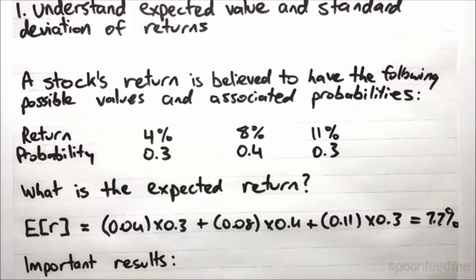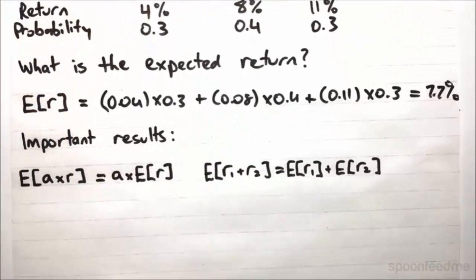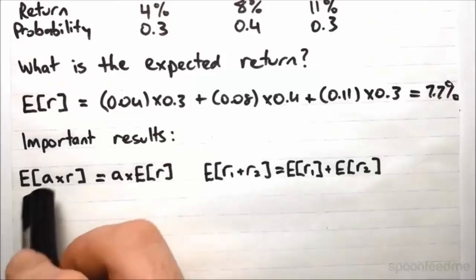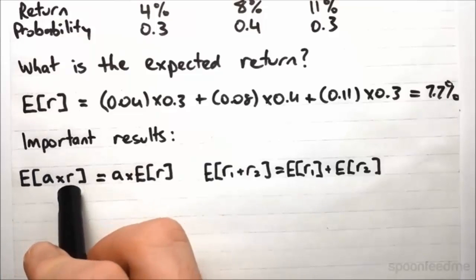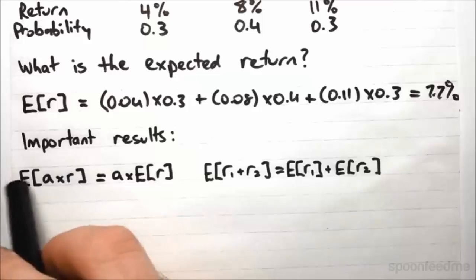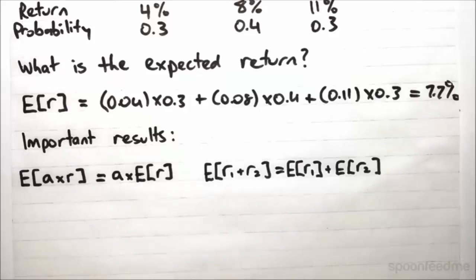And it's important that we understand the following results we get with regards to expected value. This will be important when we start to look at portfolios. So if we take a constant, so A is just a constant number here, and we multiply that by the variable which we are measuring the expected value of, then the expected value of that is just the constant times the expected value of the variable. Very simple result, and you can demonstrate it very easily.